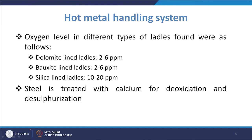Oxygen levels of about 10 to 20 ppm are observed in silica-lined ladles. Steel is treated with calcium for deoxidation and desulphurization, since sulfur is also deleterious for quality steel. In most cases, the minimum amount of oxygen is targeted, and calcium treatment for deoxidation and desulphurization is the normal industry practice.